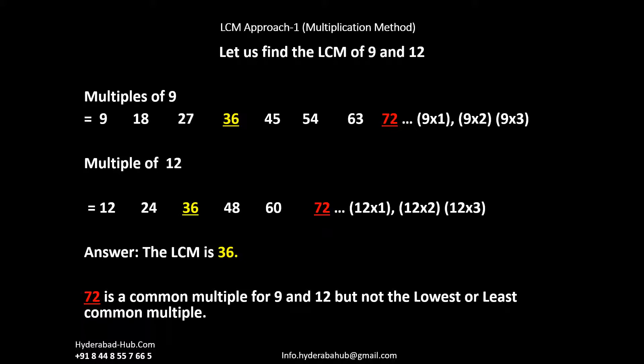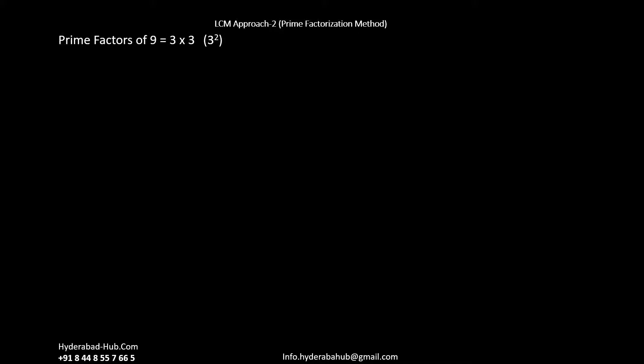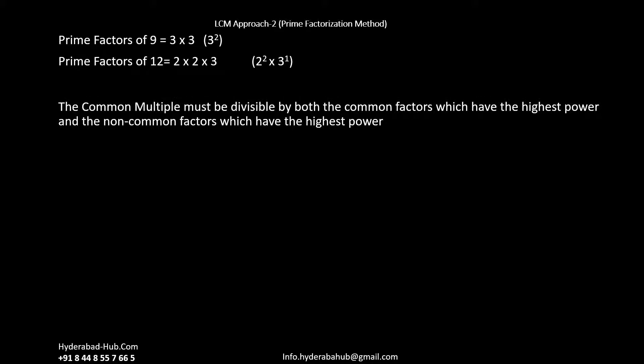The second method to get the LCM is the prime factorization method. Prime factorization means getting the prime factors of a number. For example, 9 has 2 prime factors of 3, so 9 = 3 × 3 = 3². Similarly, the prime factors of 12 include 2 × 2 × 3, meaning there are 2 prime factors of 2 and 1 prime factor of 3, so 12 = 2² × 3.